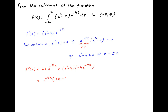Taking e raised to the power of minus 4x common in the brackets, we have 2x minus 4x squared plus 16. This implies that the value of f''(x) at x equal to 2 is equal to e raised to the power of minus 8 times, in the brackets, 4 minus 16 plus 16, which is equal to 4 times e raised to the power of minus 8, which is positive.